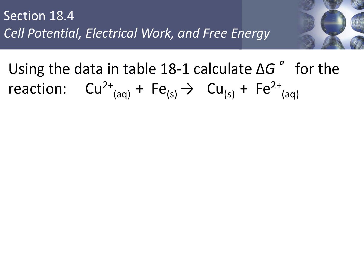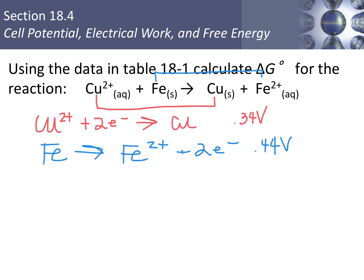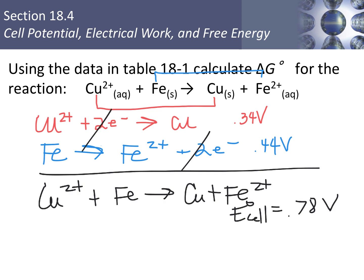Let's do an example where we calculate delta G for a redox reaction, using the table from sections 2 and 3 to find the voltage for each half reaction. Here are the two half reactions: copper ion with a +2 charge plus 2 electrons gives copper atoms at 0.34 volts; iron atoms become iron ions with a +2 charge at 0.44 volts. When I add the two half reactions together, I get 0.78 volts for the standard cell potential.